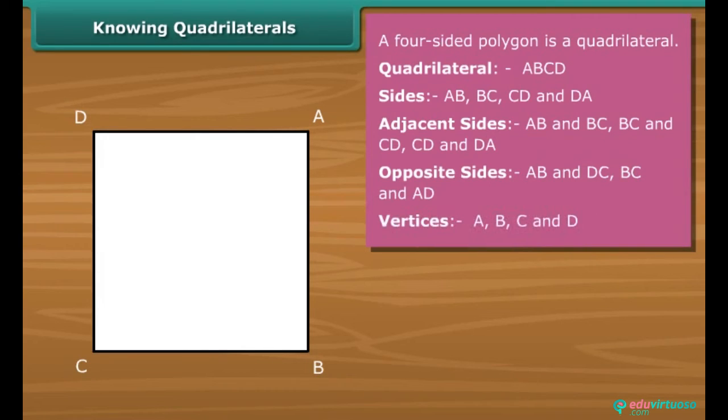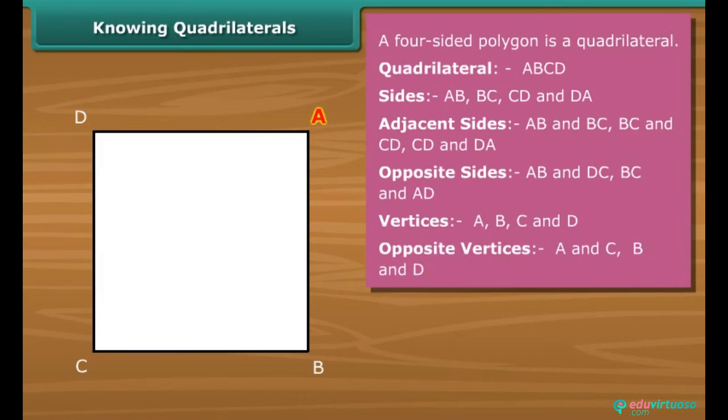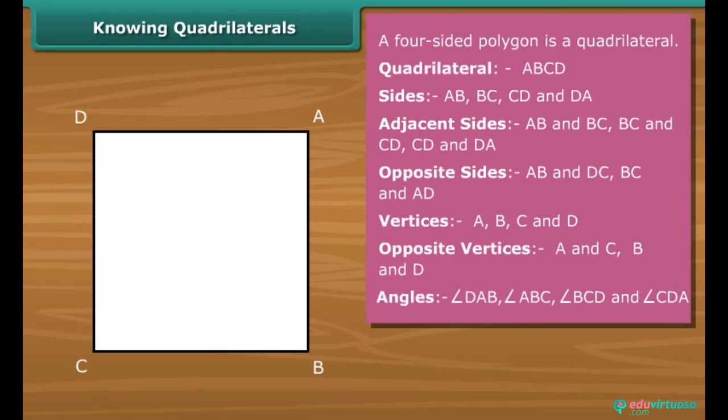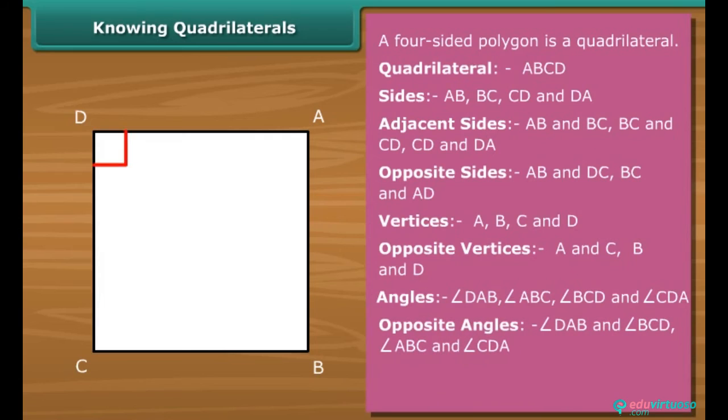The four vertices of quadrilateral ABCD are A, B, C and D. Among them A and C, B and D are opposite vertices. The four angles of a quadrilateral are angle DAB, angle ABC, angle BCD and angle CDA.